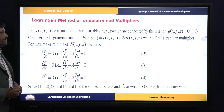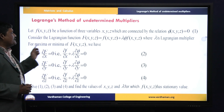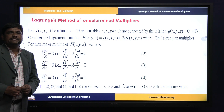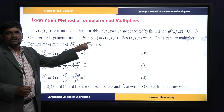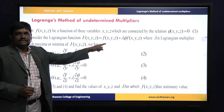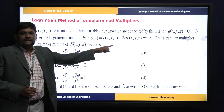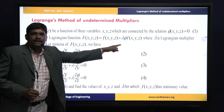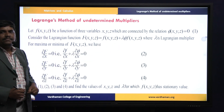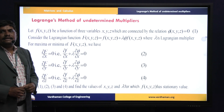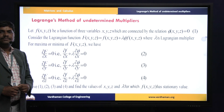Consider the Lagrangian function: capital F(x, y, z) = small f(x, y, z) + λ·φ(x, y, z), where λ is the Lagrangian multiplier.